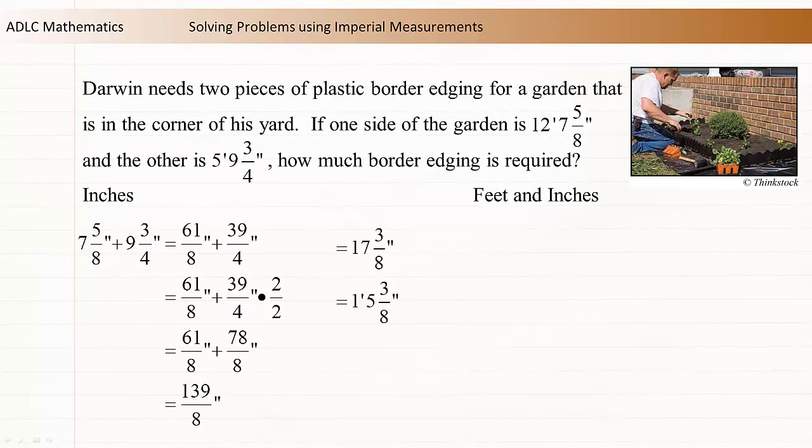Now that we've added the inches, we'll add the feet measurements to get our total. The first measurement included 12 feet. The second measurement included 5 feet. And we have 1 foot 5 and 3 eighths inches from our previous calculation. Adding these together gives 18 feet 5 and 3 eighths inches. So Darwin needs a total of 18 feet 5 and 3 eighths inches of border edging.